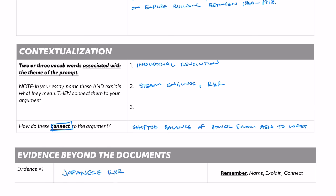One last thing — look at our evidence beyond the documents and make sure we have some. We already identified it on the document side, so I'm just transferring it here. I need to make sure I don't forget to connect it to my argument — that's one place where people miss the point for evidence beyond the documents. You have to connect it back to your argument. My note: 'Japanese railroads in Korea were about facilitating imperial control.' And from there, you just start writing. All the pieces are in place, and if you follow this procedure and do it well, you will be on your way to earning a great score on your DBQ.